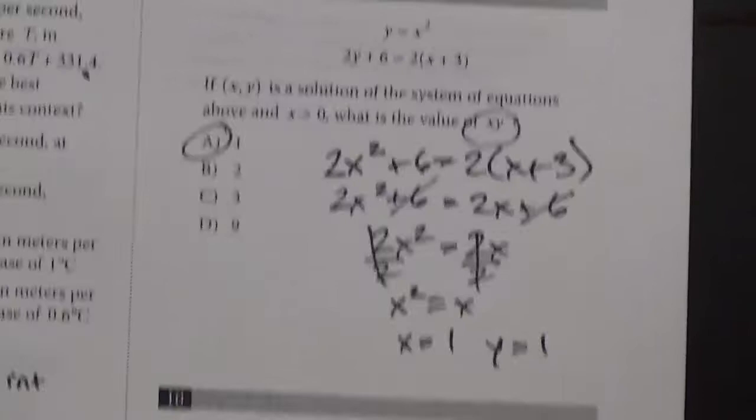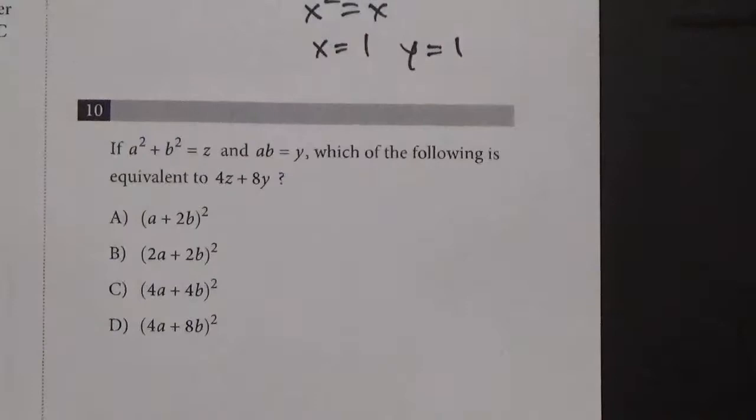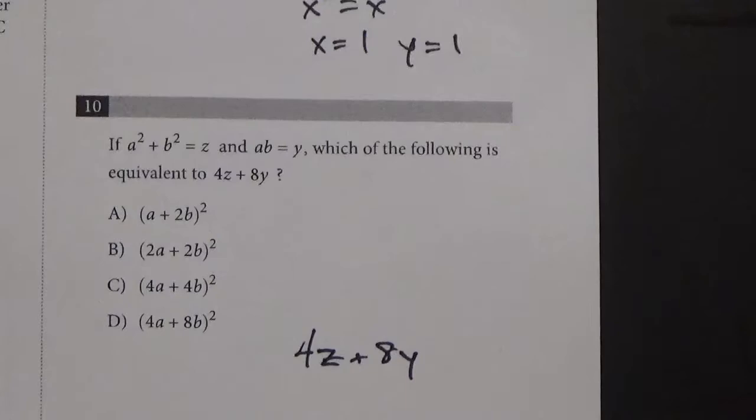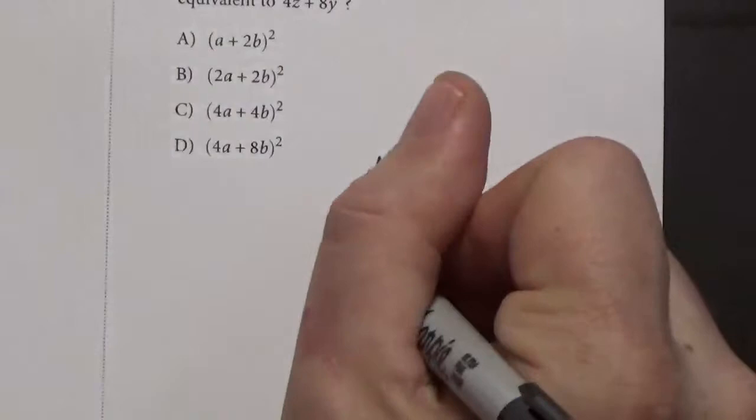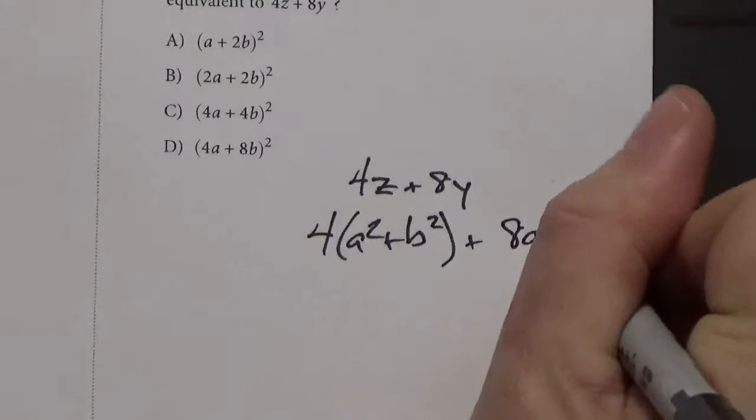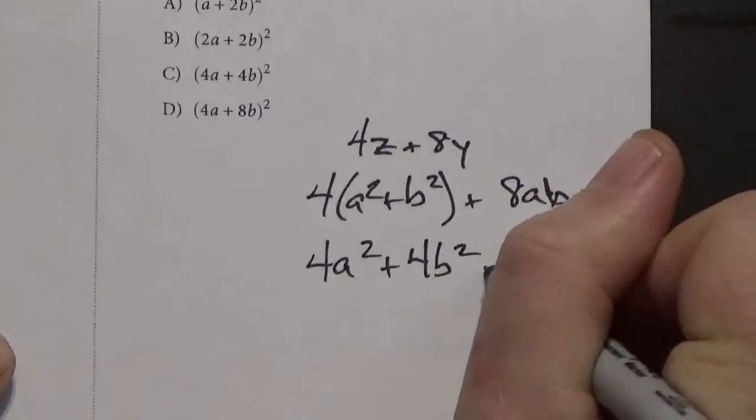Alright, number 10. a squared plus b squared equals z and ab equals y. What's the following equivalent to 4z plus 8y? Okay, this looks like again it's going to be a substitution question. So I'm going to write down what they give me, what I want to be solved for at the bottom. So 4z plus 8y. Now again, substitution shows up a lot on the SAT, so let's give that a shot. So I know that z equals a squared plus b squared, so 4 times a squared plus b squared. I know that y equals ab, so we have 8ab.